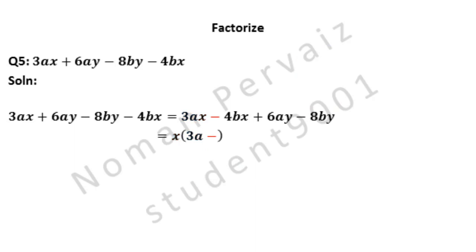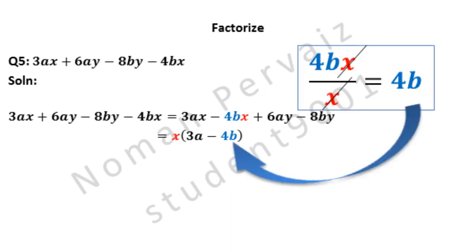Minus comes as it is. Here also, x is common so 4b is left only. Again, look at additional details: if we divide 4bx by x, then x is cancelled with x, and 4b will be left only. And this 4b is written in our solution.